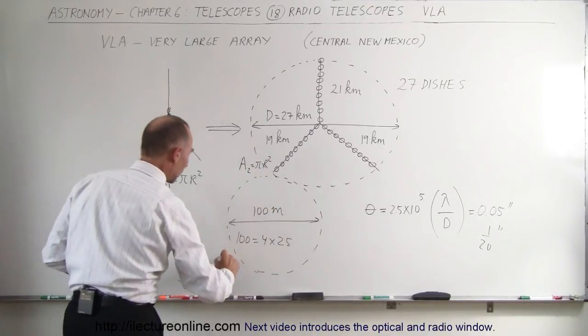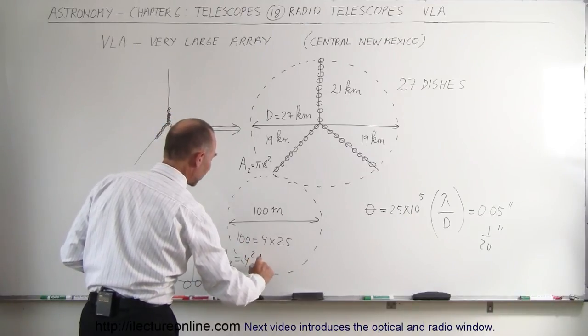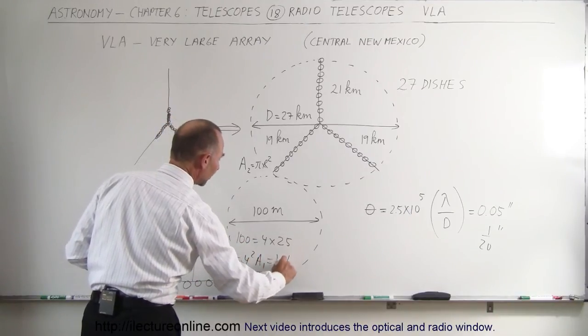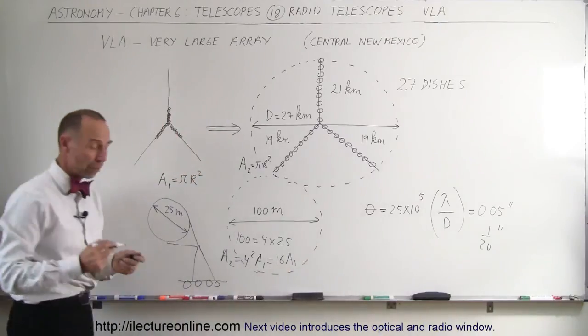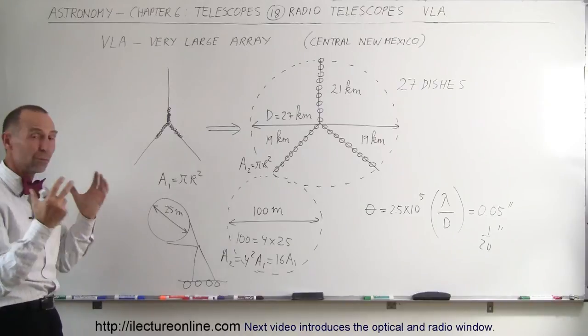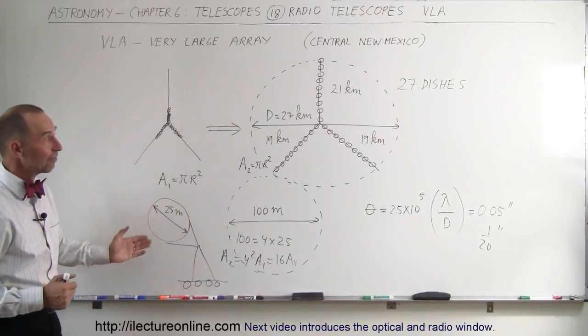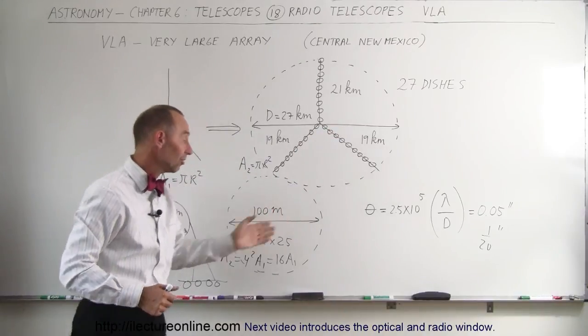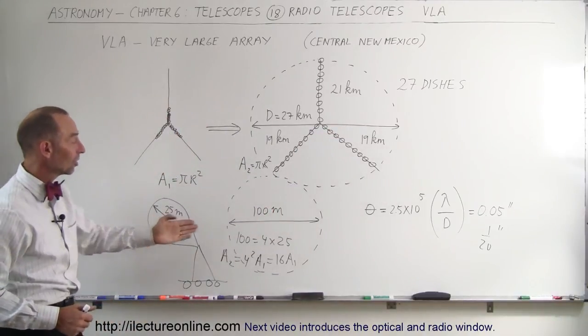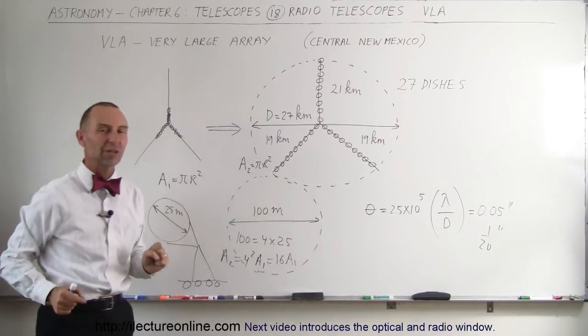This is 4 times as big as this one in area. So if I square 4, for example, so 100 is 4 times 25. And if I square 4, because we have to square 4 to get the area, then the area of this one, the area of the big one, is equal to 4^2 times the area of the small one, which is 16 times the area of the small one. So one of these big radio telescopes can receive as much energy as 16 of these. But if you have 27 of them, that's almost twice as much as this. So 27 of these dishes can receive almost twice as much energy as one of these giant radio telescopes.